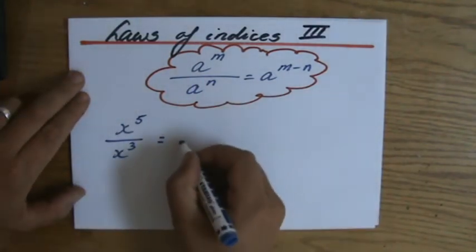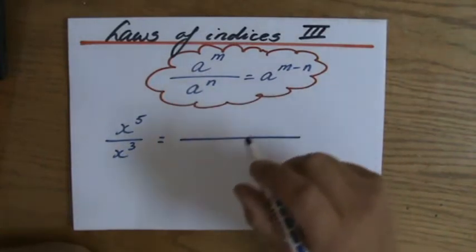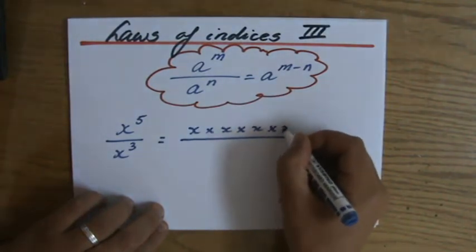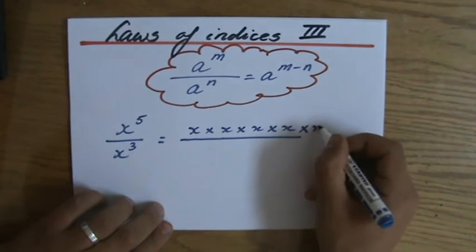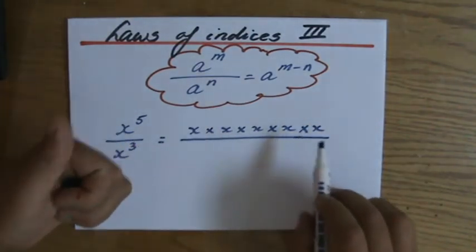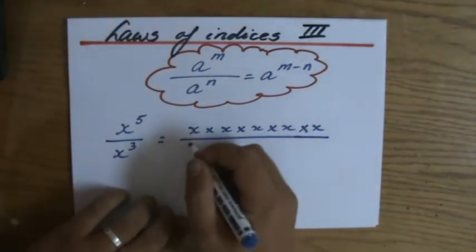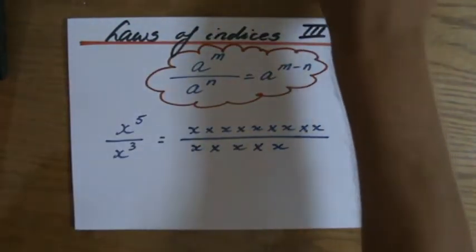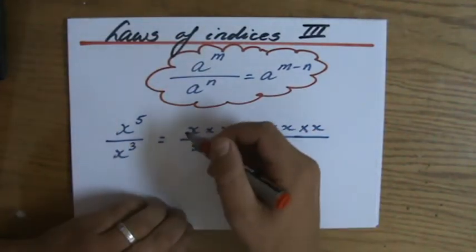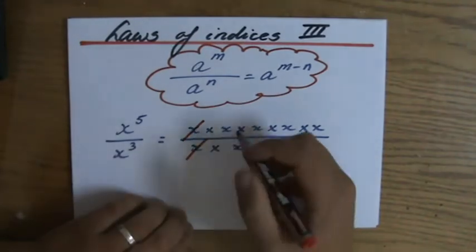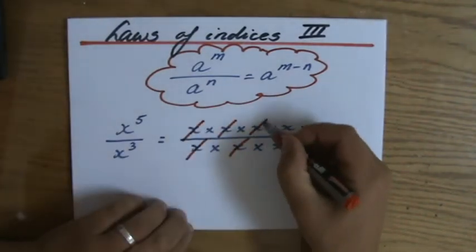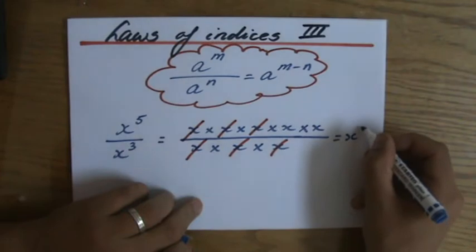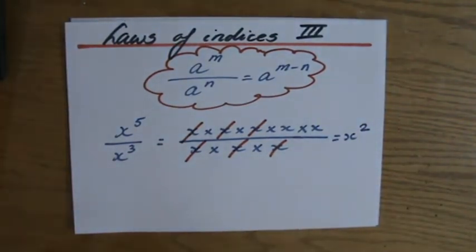Why does that make sense? Let's look at what x to the power 5 means. That means x times x times x times x times x. So x to the power 5 divided by x to the power 3 is x times x times x times x times x, divided by x times x times x. What are the common factors? Let's put crosses through the common factors — three of them cancel. What is left is x times x, which is x to the power 2. That's 5 minus 3, so it makes complete sense.